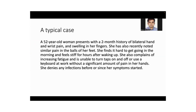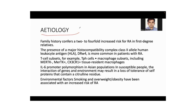A typical case: a 52-year-old woman presents with a two-month history of bilateral hand and wrist pain and swelling in her fingers. She has also recently noted similar pain in the balls of her feet. She finds it hard to get going in the morning and feels stiff for hours after waking up — remember, this stiffness is characteristic of any inflammatory arthritis. She complains of increasing fatigue and is unable to turn taps or use a keyboard at work without significant pain. She denies any infections before or since her symptoms started — a typical inflammatory arthritis, this is rheumatoid arthritis.